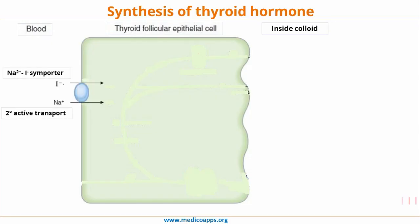The synthesis of thyroid hormone starts with the uptake of iodine inside the thyroid follicular epithelial cells. This is aided by the sodium-iodine symporter, wherein one molecule of sodium and one molecule of iodine is co-transported from blood into the thyroid follicular epithelial cells. This is an example of secondary active transport, and this step is stimulated by thyroid stimulating hormone.